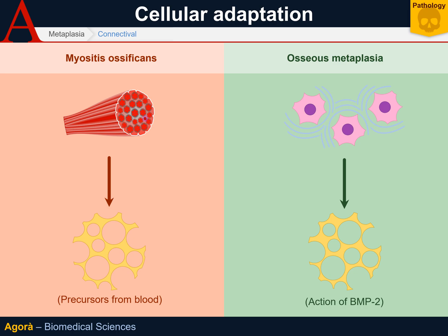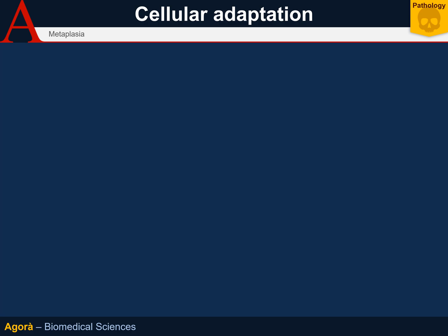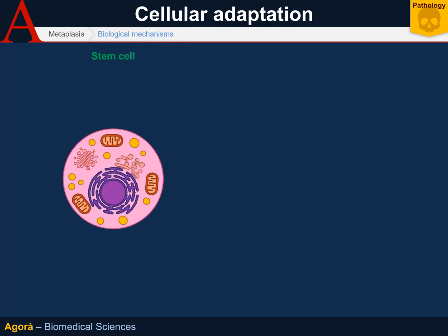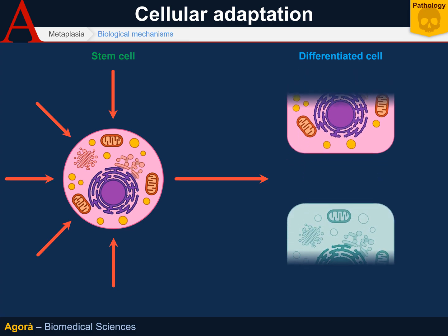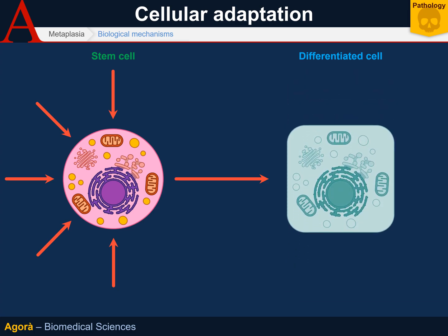Osseous metaplasia isn't caused by mature cell conversion to other mature cells, but rather by an altered cellular differentiation. This means that each tissue has its own stem cells, and that due to environmental stimuli, they differentiate into differentiated cells typical of that specific tissue. However, stimuli to stem cells change due to recurring and constant damage, thus leading to a different pathway of differentiation. As we are going to see, metaplasia may also be induced by cytokines, growth factors, and altered matrix components.